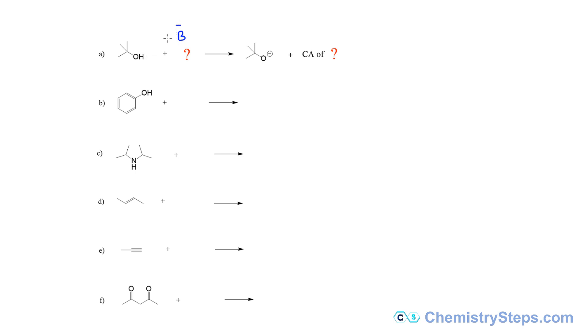When this reacts with a compound it will produce a conjugate acid of it. So this will have now BH and this H will be coming from here. The base will deprotonate this compound and get a conjugate acid of this base.